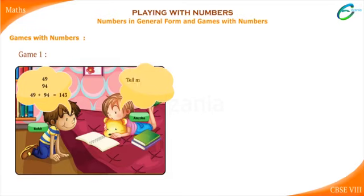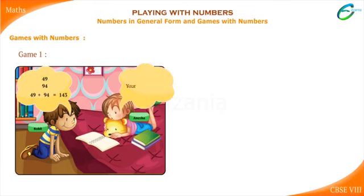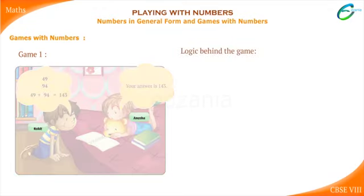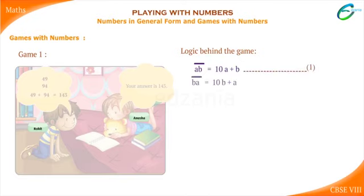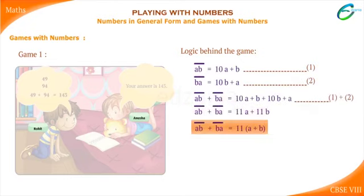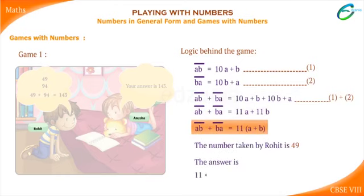Anusha: Tell me the number that you have taken. Rohit: Forty-nine. Anusha: Your answer is one hundred and forty-three. Wow Anusha, you're so brilliant! How did she know the answer? Let us see the logic behind the game. Let AB be the number: AB = 10A + B. BA is the reverse of AB: BA = 10B + A. Adding the two numbers: AB + BA = 11(A + B). The number taken by Rohit is 49, so the answer is 11 × (4 + 9) = 11 × 13 = 143.